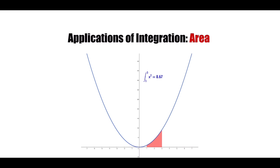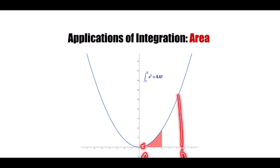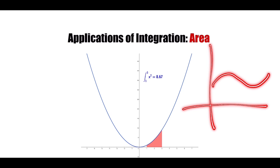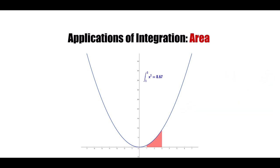So how is integration applied to find area? To find the area under a curve defined by a function f(x) between two points — for example, a point a and a point b — we apply the definite integral. The area is equal to the integral from a to b of f(x) dx, and whatever you find there will be the area under that curve.